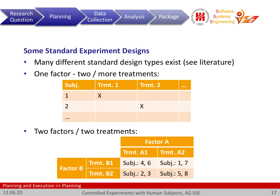A more complex example is when I have two factors — two different independent variables to vary as part of the experiment. For each of these factors, I have treatments: for factor A, treatment A1 and A2, and for factor B, treatment B1 and B2. The result is four different combinations, so I need subjects for each of these four different cells.